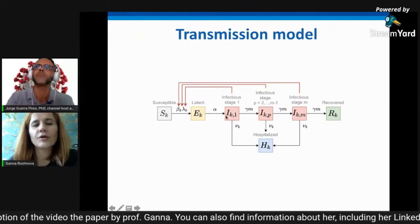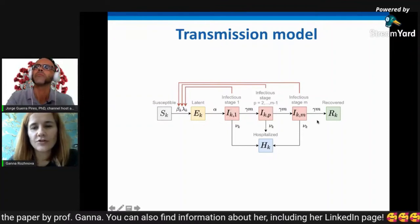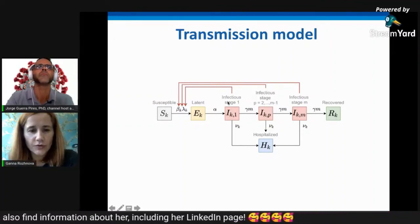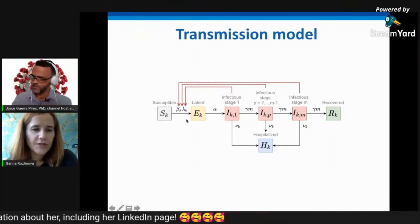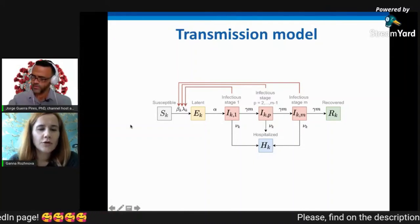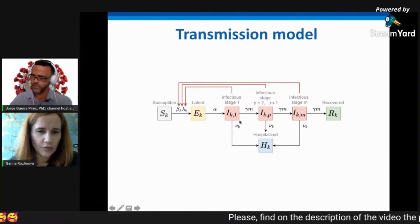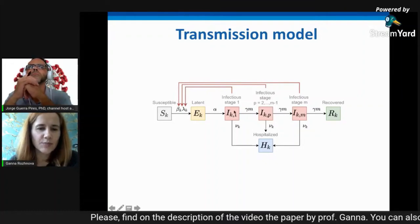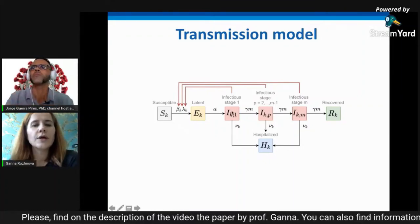And from the latent class, you go, you become infectious. And from the infectious stage, you go either to recover or you go to the hospital. So the first step is define these different states that are important in your model. You can make this more detailed. For example, you could also include symptomatic or asymptomatic infections, split these boxes into two and so on.